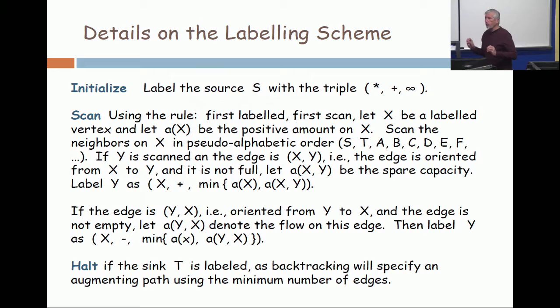The pseudo-alphabetic order means on the letters S, T, then A, B, C, D, E. That's the pseudo-alphabetic order, and that's the order that you scan on. When you're scanning from S, you look first for T and see if there's an edge.